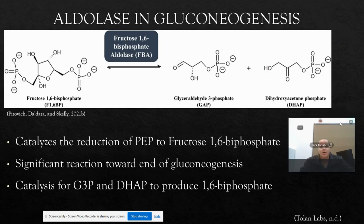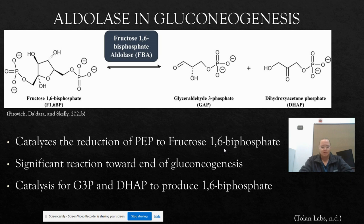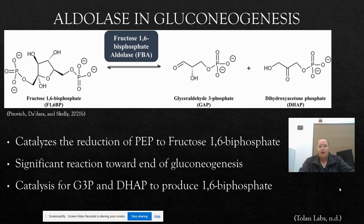In gluconeogenesis, aldolase has almost the opposite role — it catalyzes the reduction of PEP to fructose-1,6-bisphosphate. Its most significant reaction in gluconeogenesis is towards the end, where it takes two three-carbon molecules and combines them to form the six-carbon fructose-1,6-bisphosphate molecule — it is the catalyst for G3P and DHAP to produce fructose-1,6-bisphosphate. So aldolase has the opposite effect: in glycolysis it splits the molecule apart, and in gluconeogenesis it takes two molecules and synthesizes a new one.